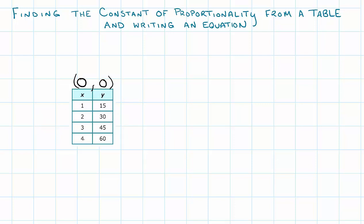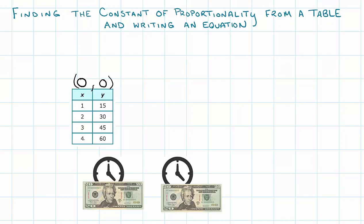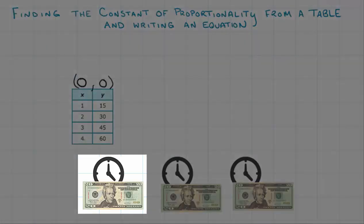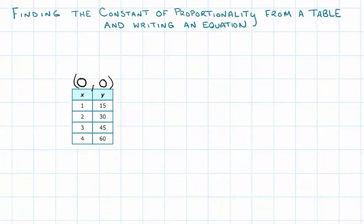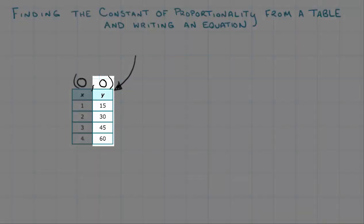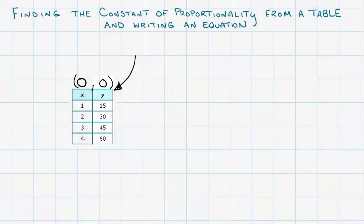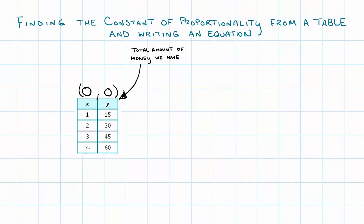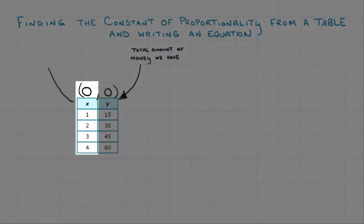Let's talk about the x and y values. I want you to think of every table, every equation, every graph that you see as a job. In a job, normally people get paid by the hour. If you work a certain amount of hours, you get paid a certain amount of money. Let's think of the y value as the total amount of money that we currently have, and the x value as the amount of hours that we work to make that money.